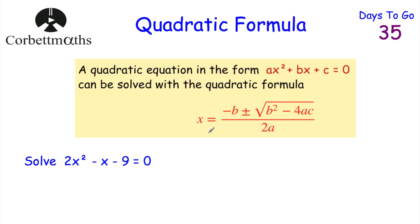That formula is given to you, so it's not something you need to learn off by heart — though if you're doing A-level maths you probably will learn it off by heart. We've been given a question that says to solve 2x squared minus x minus 9 equals zero, and we're going to use the quadratic formula to solve this quadratic equation.